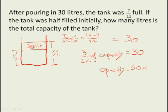So what is the total capacity of the tank? This 3 over 22 will move to the right side of the equation and it will be flipped to become 22 by 3, and then you can cancel. So 22 times 10 is 220 liters. That is what your answer is.